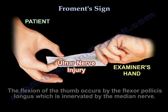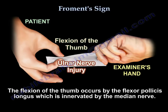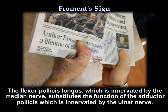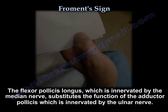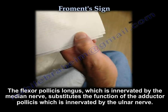The flexion of the thumb occurs via the flexor pollicis longus, which is innervated by the median nerve. This muscle substitutes the function of the adductor pollicis, which is innervated by the ulnar nerve. Here are multiple examples of a positive Froment's sign.